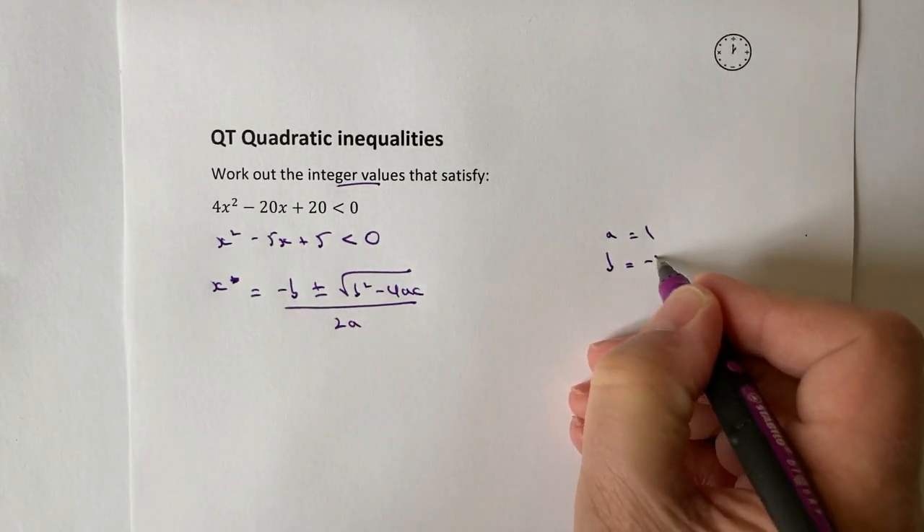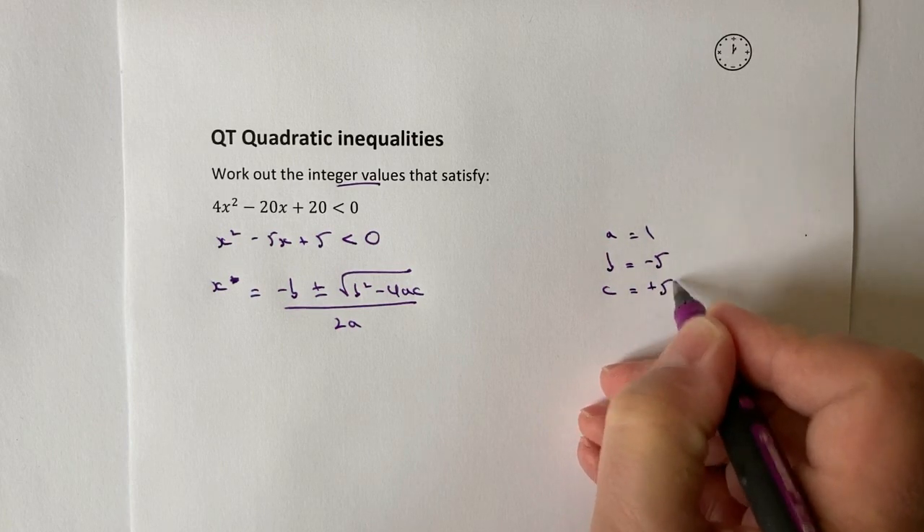So let's have a look at what a, b, and c actually mean. Well, a is going to be the number in front of the x², which is 1, so a = 1. b is going to be -5, and c is going to be positive 5.